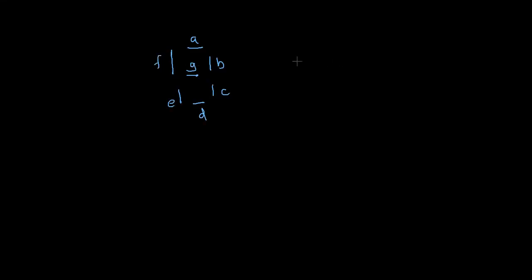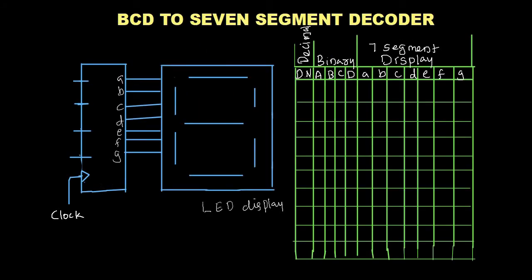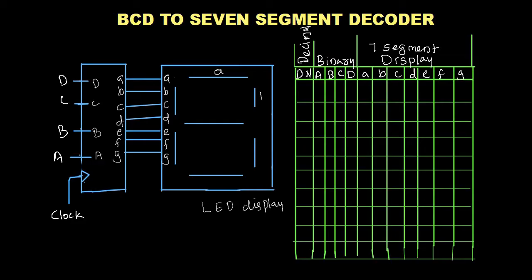If I want to display the decimal 1, I have to turn on these two LEDs — B and C — and the remaining LEDs will be off. The inputs are BCD numbers, written as A, B, C, and D. We are using 7 LEDs for the output, labeled A, B, C, D, E, F, and G. This is our LED display.